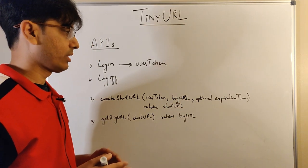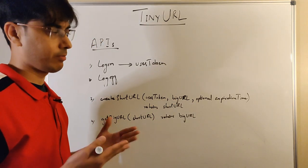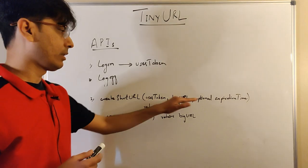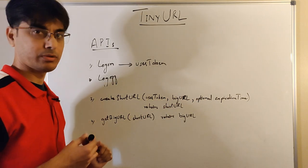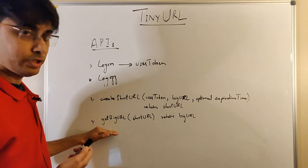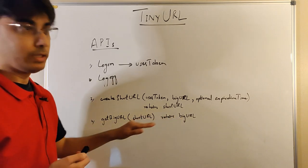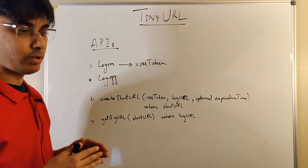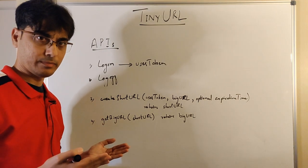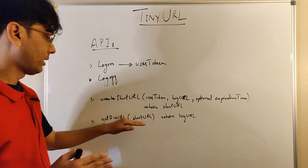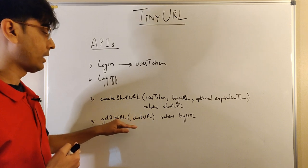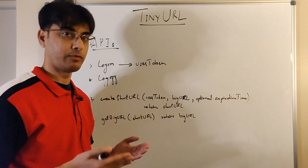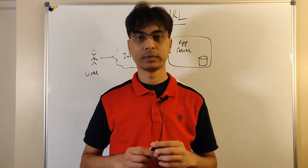The second main API is getBigURL. A user provides a short URL — we don't need a user token here because the read operation can be done by any anonymous user. The service will return the big URL if a mapping exists for that short URL; otherwise it will return not found. Now let's see a very simple high-level design of our service.